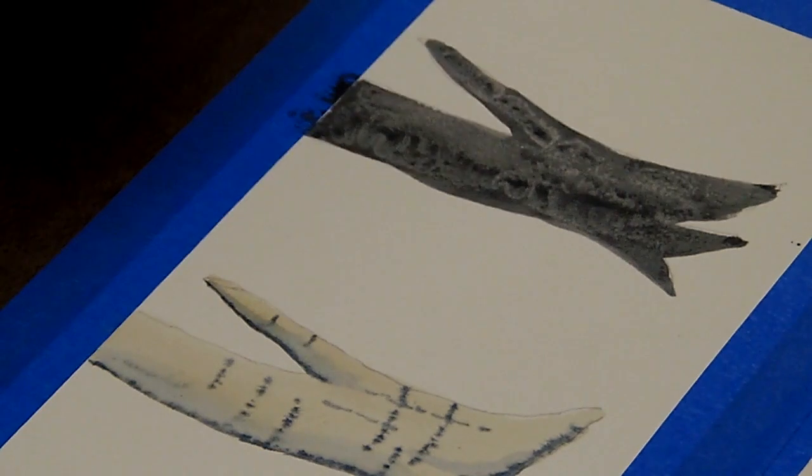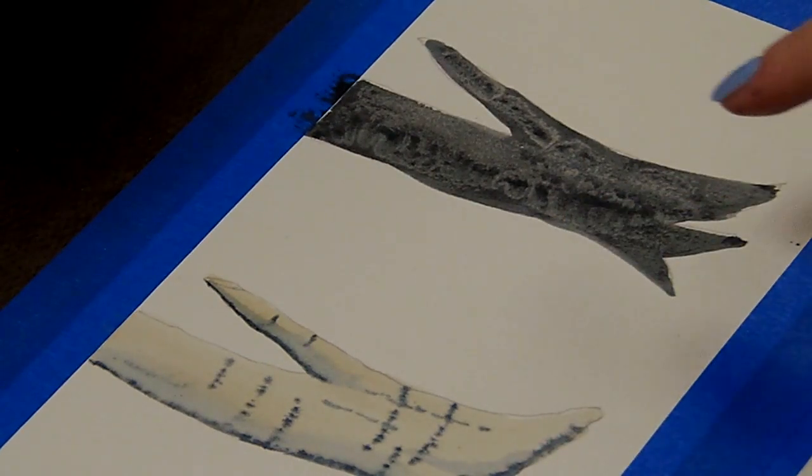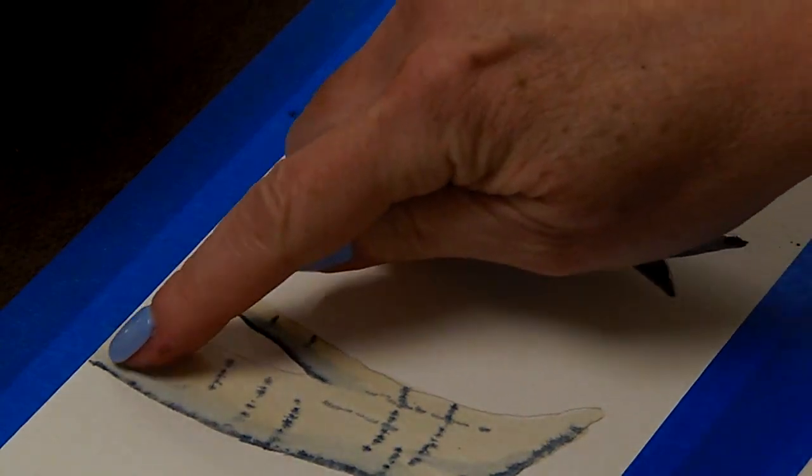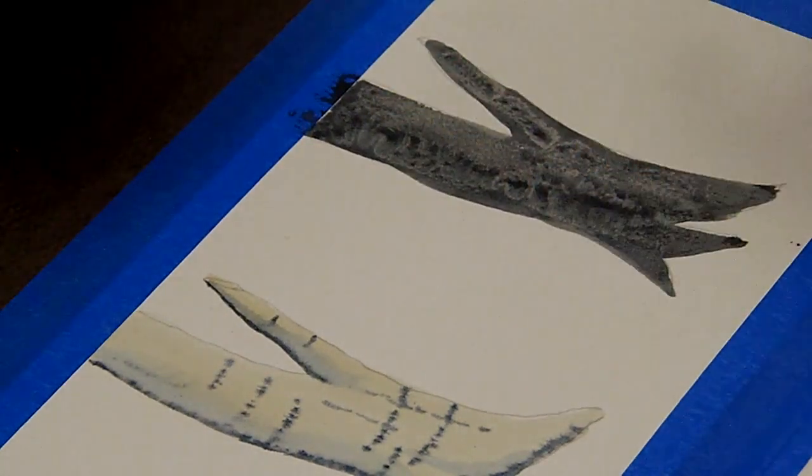So I'm ready to do the second layer of color on, or a second treatment on my trees. And the one thing I am noticing on this tree over here is, I did a little bit of shadow line on this one, on the shadow side, but I didn't on this one and I really wish I had.